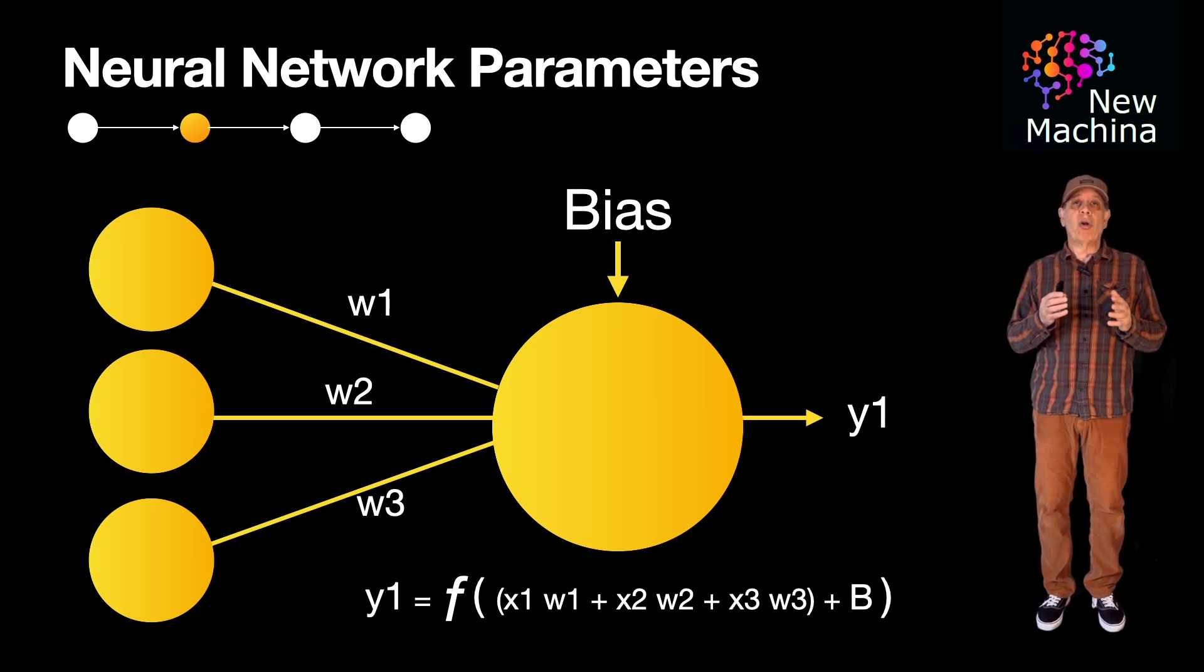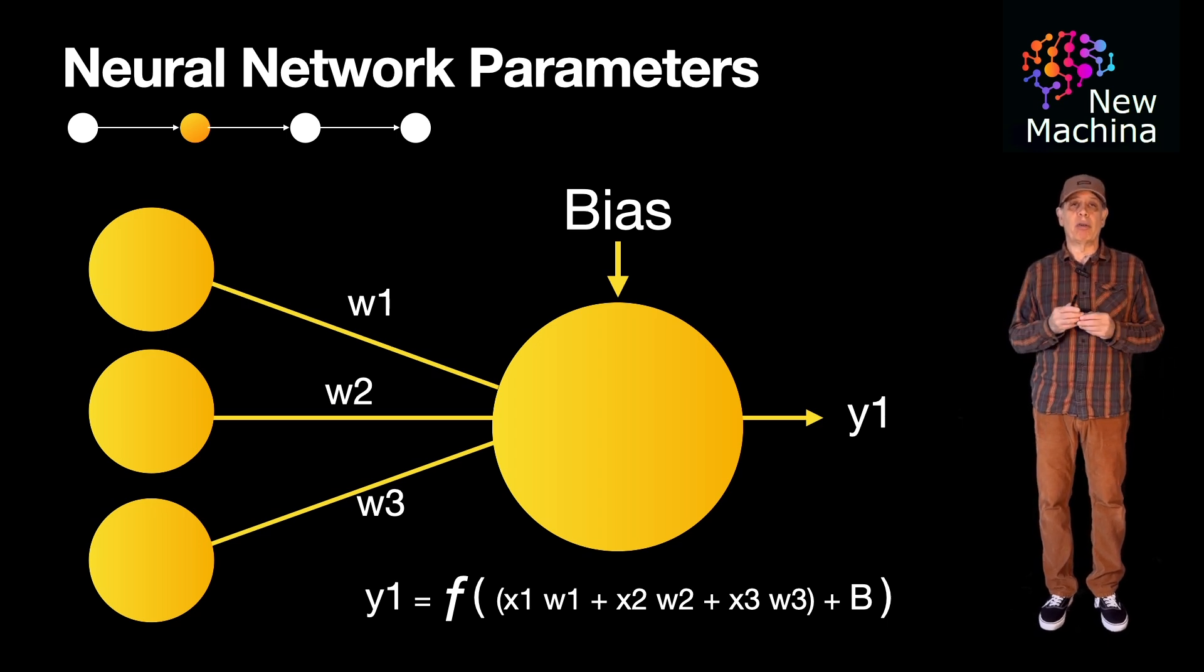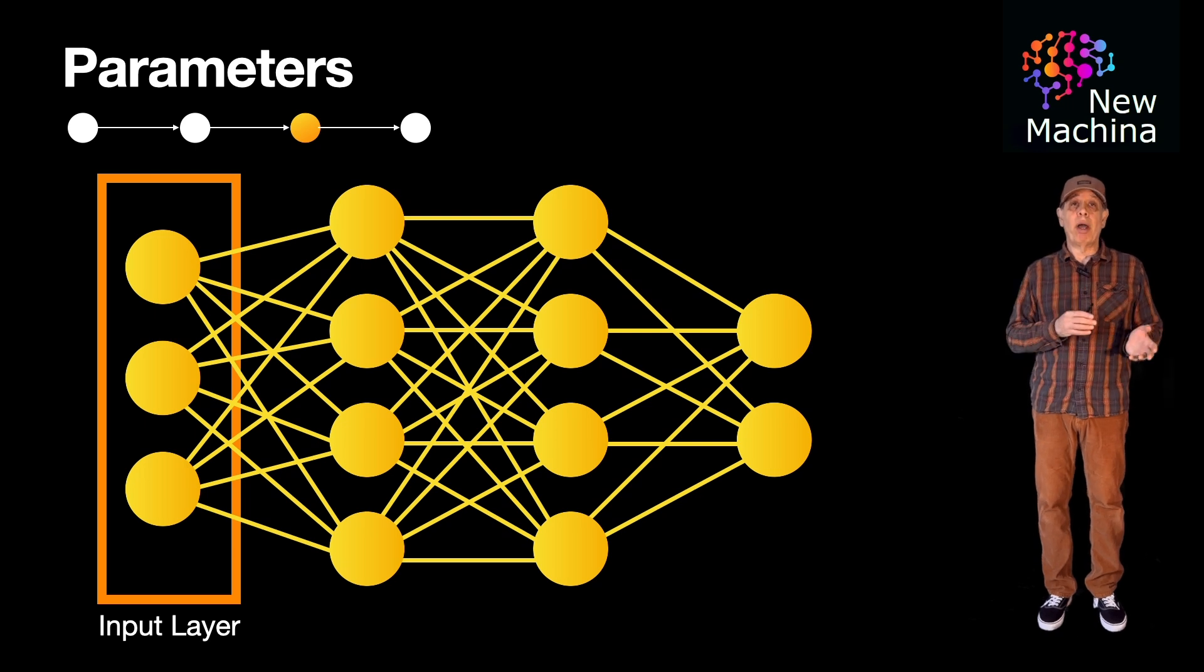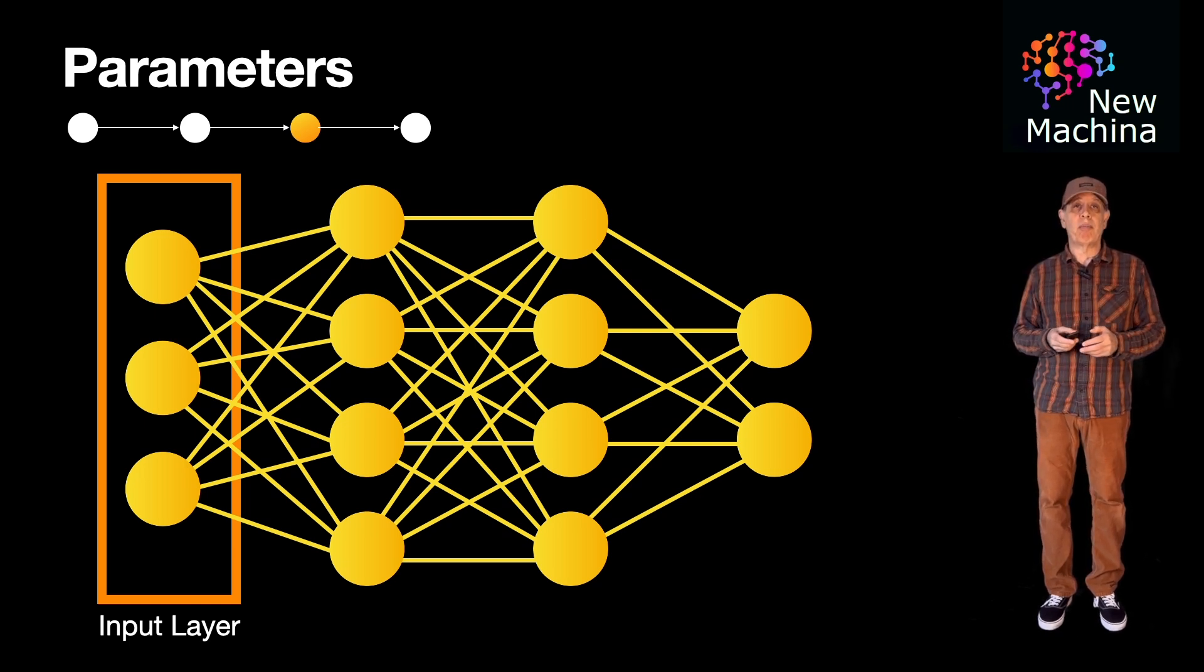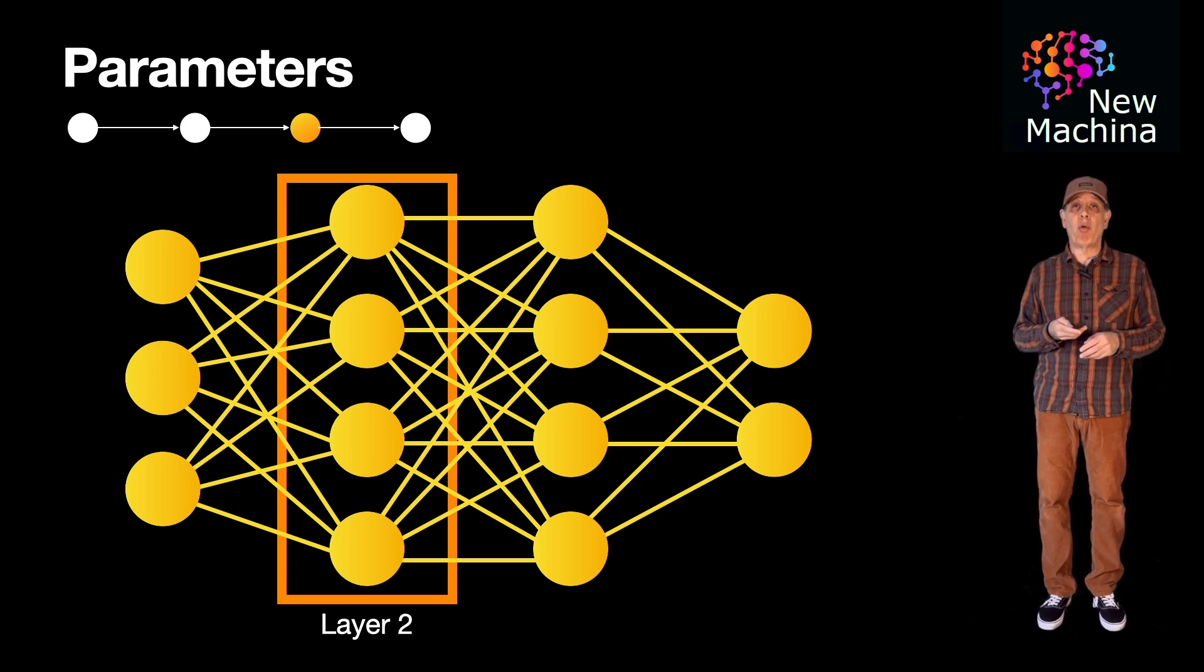So if we look at our original neural network, how would we calculate the total number of parameters? Well, the network structure is defined by layer one, which is the input layer with three inputs. Layer two, which is our first hidden layer, has four neurons.